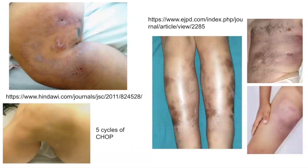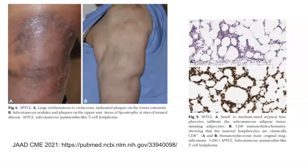Here are some further images demonstrating reported cases of subcutaneous panniculitis-like T-cell lymphoma in the literature. On the left-hand side, we have some active lesions on the top picture, whereas on the bottom picture we have some improvement seen after five cycles of the CHOP chemotherapy regime. There are several more pictures on the right-hand side demonstrating different clinical appearances. Here is another example demonstrating large erythematous plaques on the lower extremities associated with subcutaneous nodules and plaques with some areas of lipoatrophy.